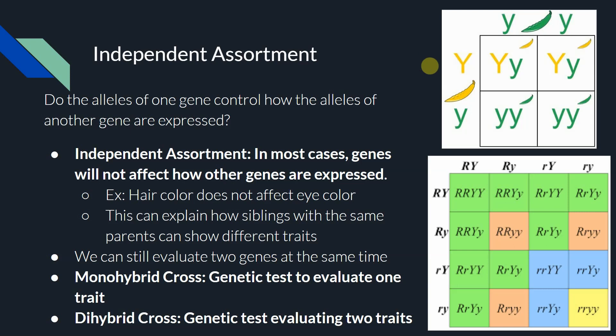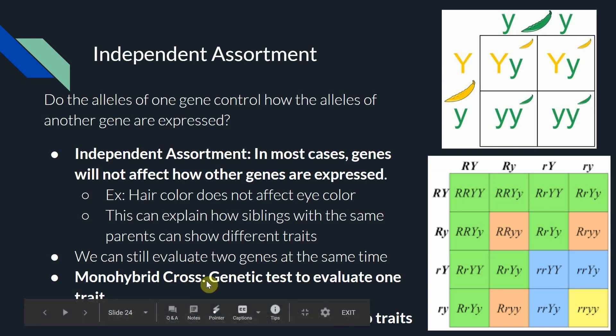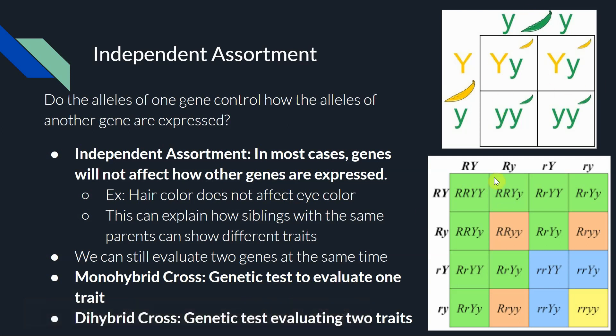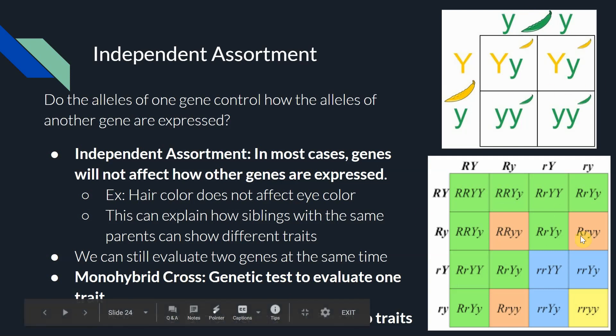Welcome back. If you just watched the previous video, we just talked about independent assortment — the idea that genes will not affect how other genes are expressed. We talked about how instead of looking at one trait at once using a monohybrid cross, we're now going to start looking at two traits at once using a dihybrid cross.